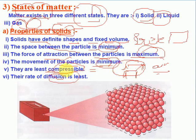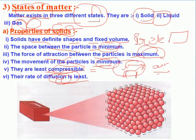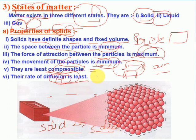The rate of diffusion is least in solids because there is very little intermixing. For example, when we write on a blackboard with chalk and leave it for a week, the impression remains and it is difficult to rub off — showing that diffusion in solids is very slow.